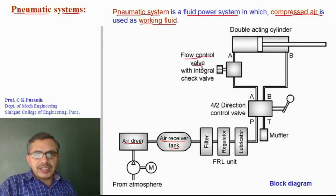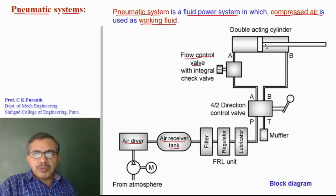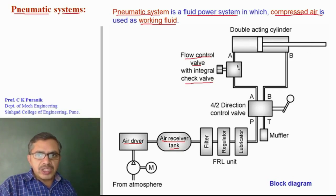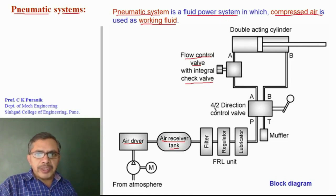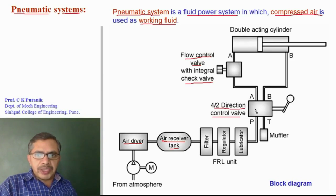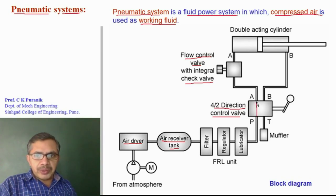The flow control valve regulates the rate of flow of compressed air going into the cylinder during extension, so the extension speed is controlled. During retraction, compressed air flows through the check valve and hence the retraction speed is not controlled. Extension and retraction of the cylinder is controlled by a 4x2 direction control valve. In the first position of the lever, there is a connection from P to A and B to T, so compressed air flows from P to A and B to T, and hence the cylinder extends.